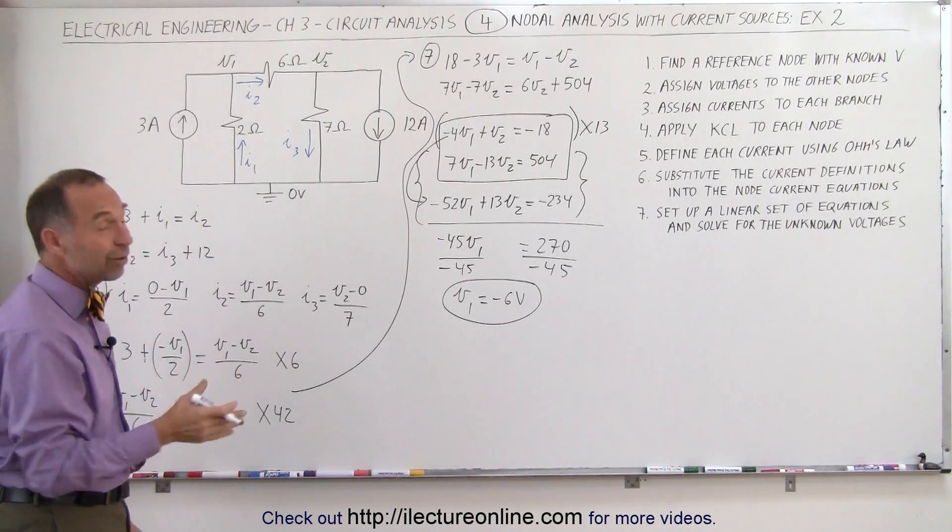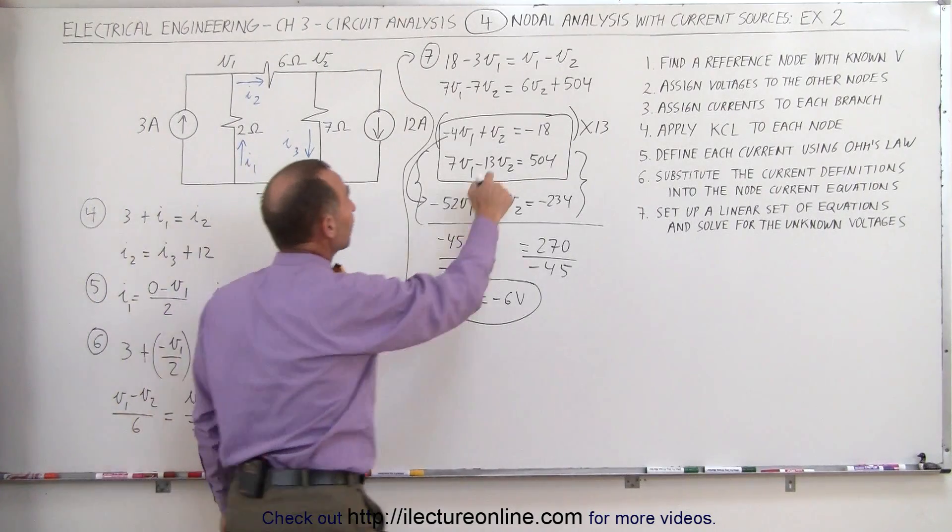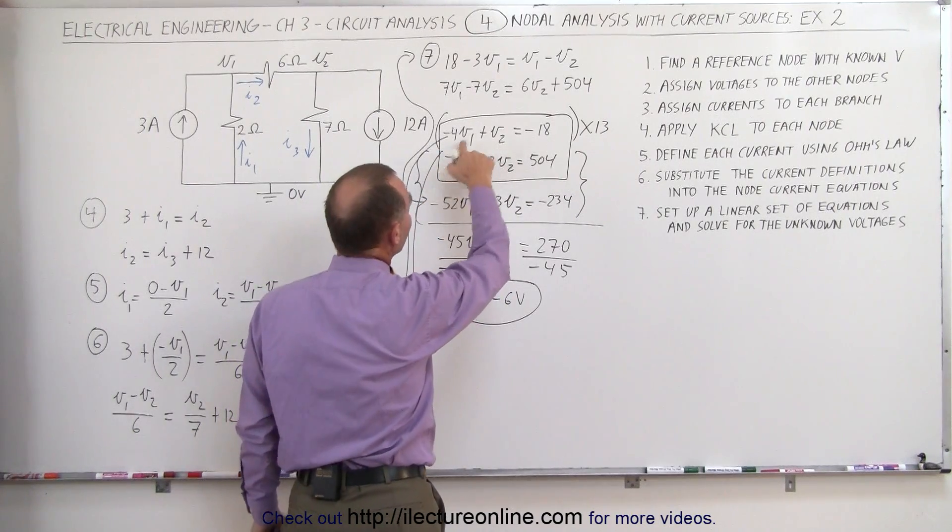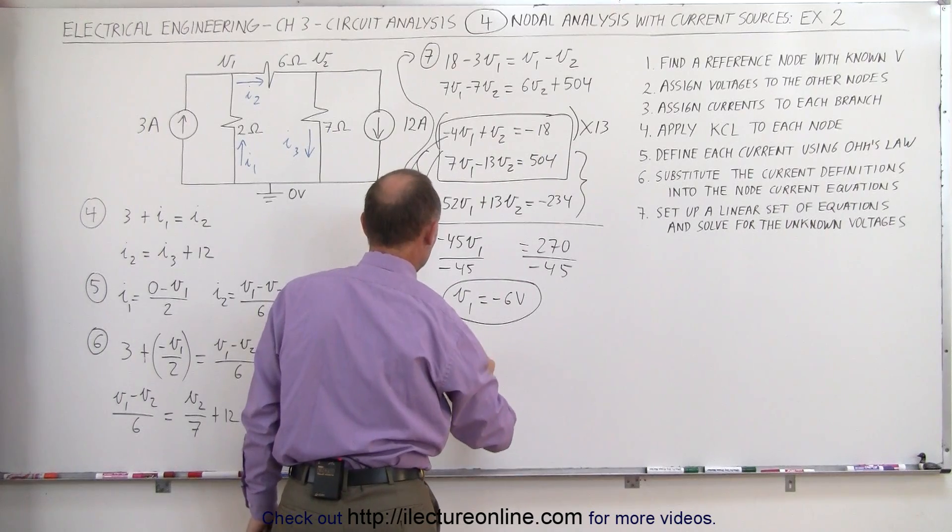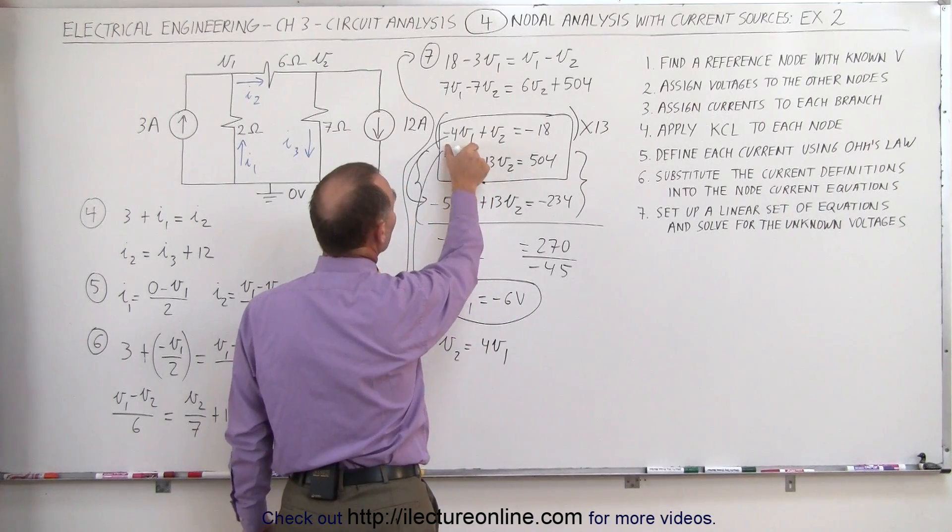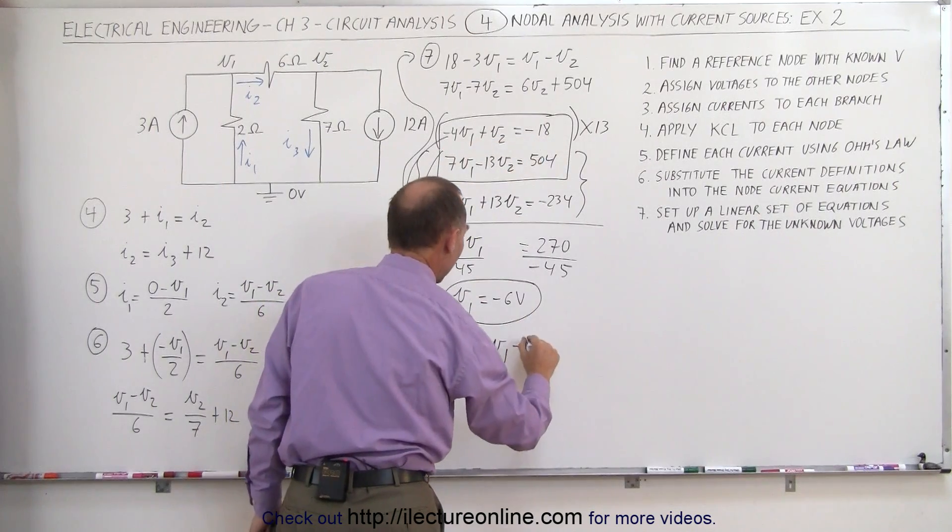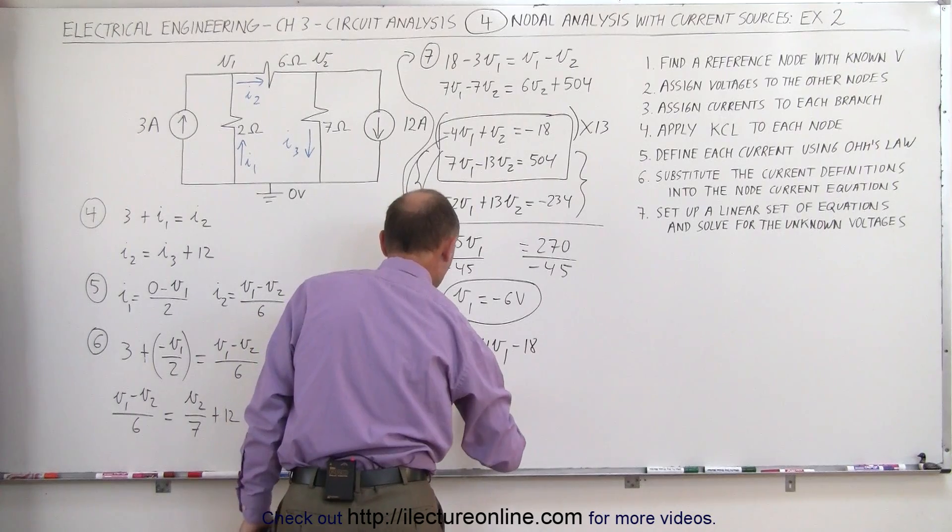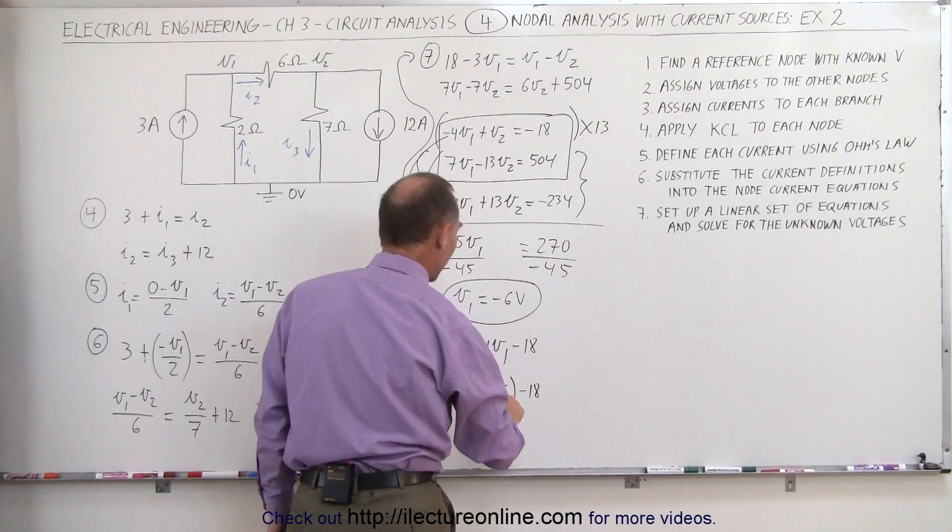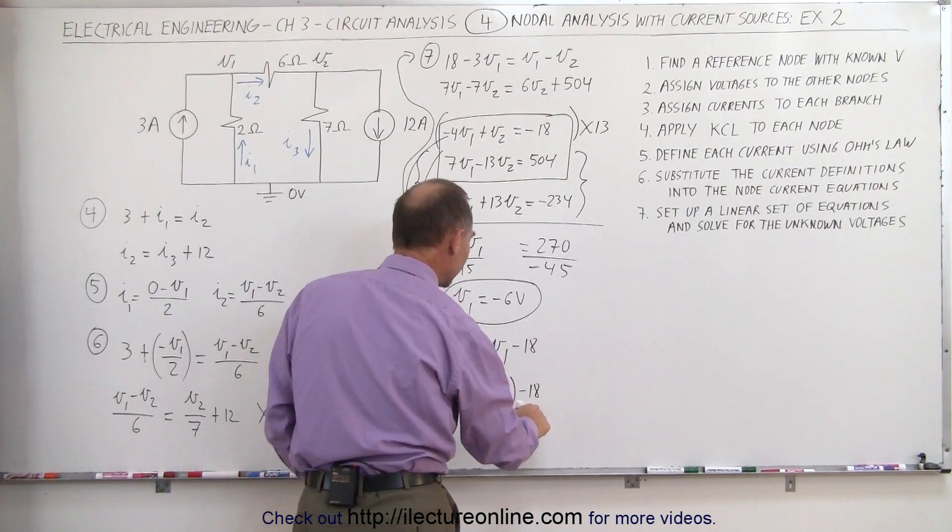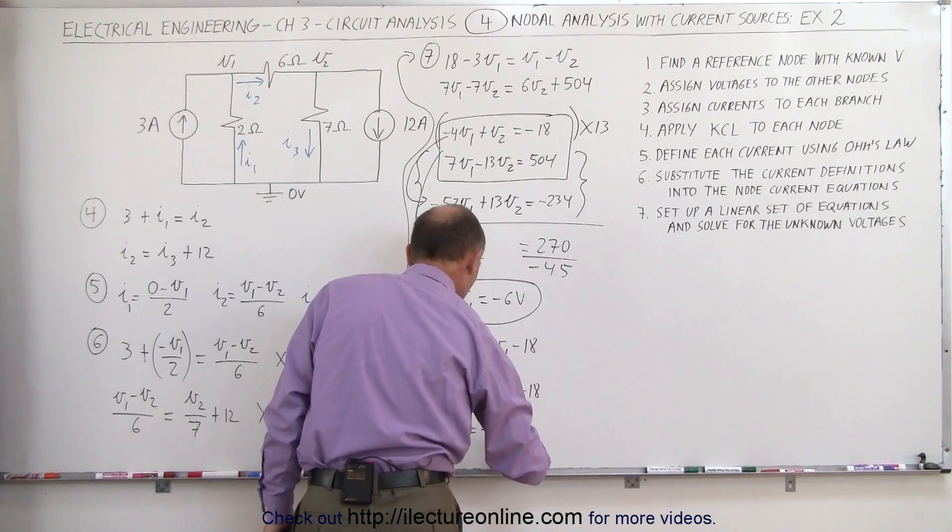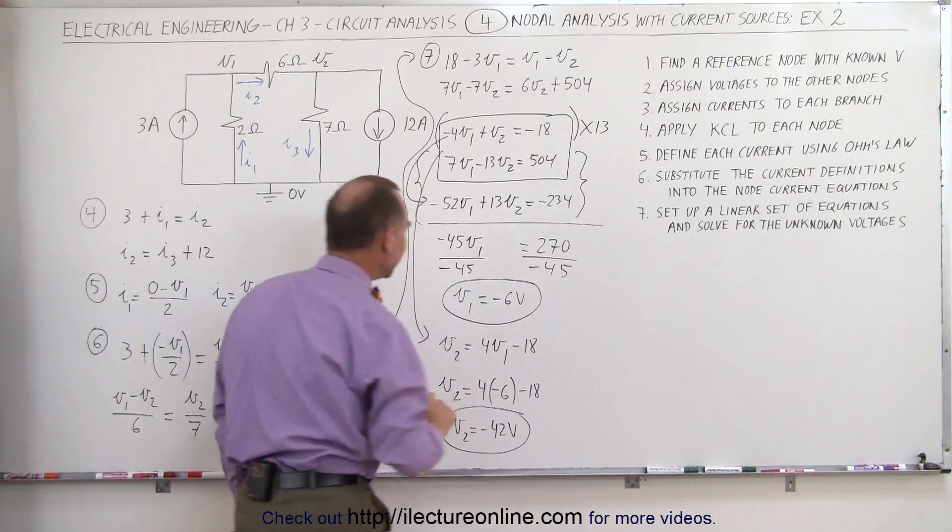Now we need to find V2. Well, once we find V1, V2 can be easily found by taking this equation in its form and moving the minus 4 V1 to the other side. We get V2 equals a positive 4 V1 because when we move this across, it becomes a positive minus 18. V2 is equal to 4 times V1, which is minus 6, minus 18. That's minus 24 minus 18. That would be minus 42. V2 equals minus 42 volts. And there we have the voltage at the next node.